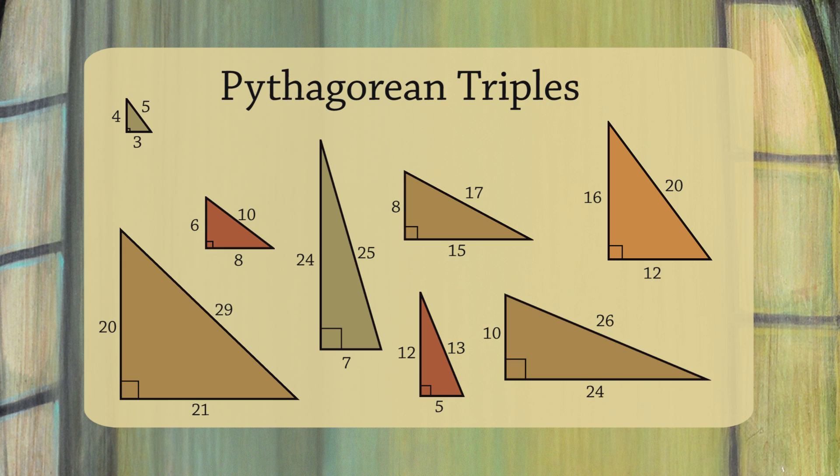Whenever you have a right triangle where all three sides are integers, we say the lengths of the sides form a Pythagorean triple.